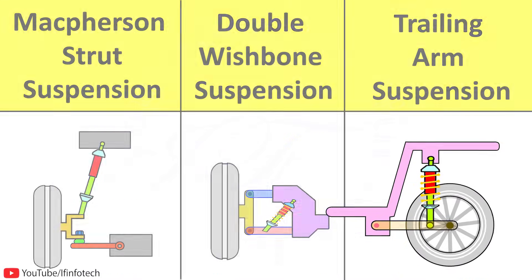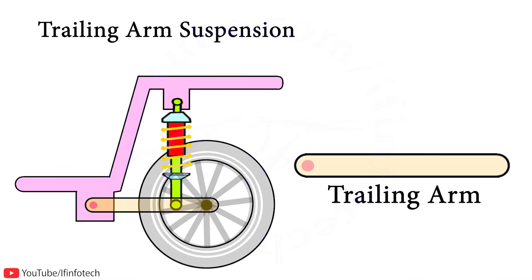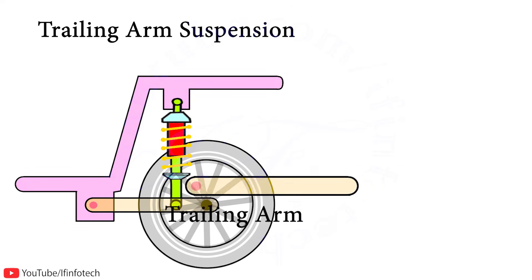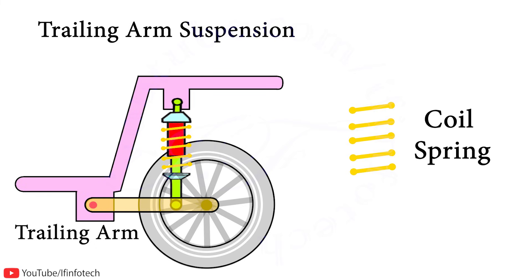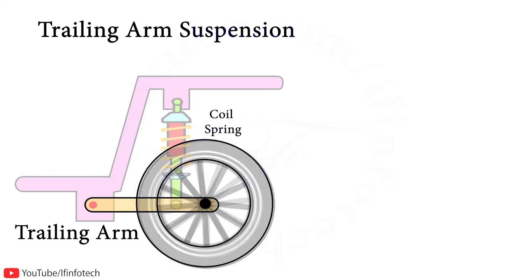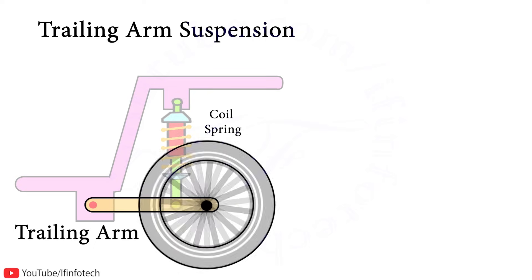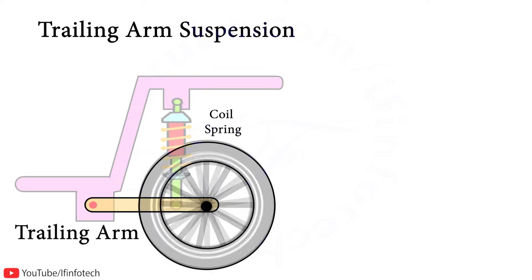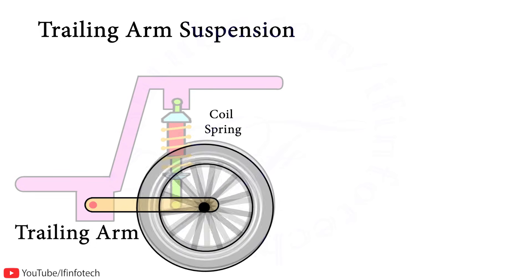The next is trailing arm suspension, which employs trailing arms that are pivoted to the car body and rigidly fixed to the wheel at the other end. The upper surface of the frame supports the coil spring. The system allows the wheel to move up and down to deal with the road surface. Any lateral movement and change in camber angle is not allowed.